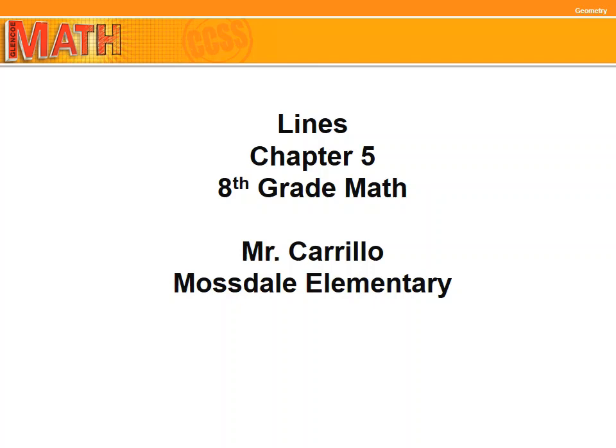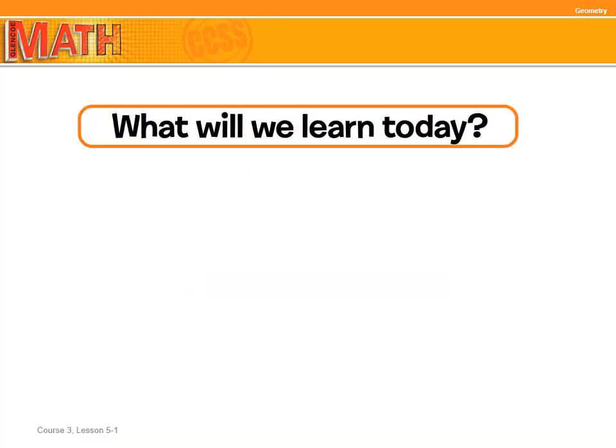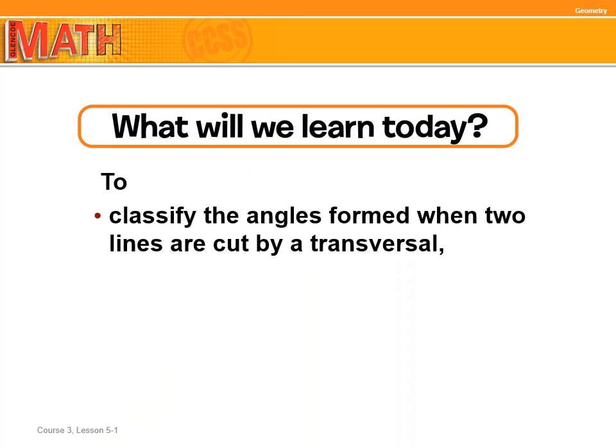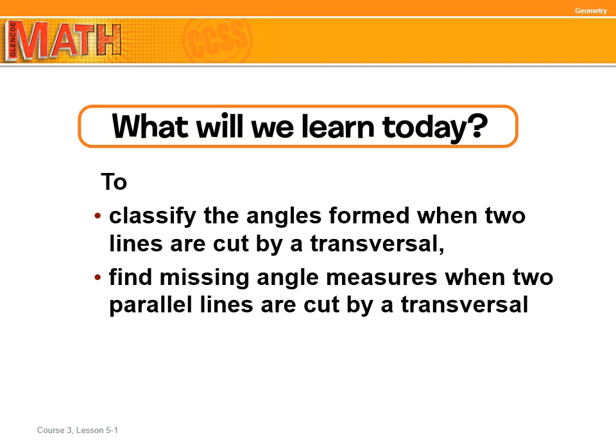Lines, Chapter 5. What we will learn today: to classify the angles formed when two lines are cut by a transversal, and to find missing angle measures when two parallel lines are cut by a transversal. So we will classify and we will find the missing angle measures.